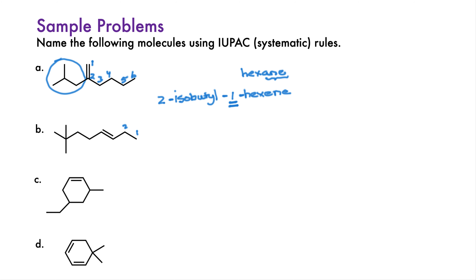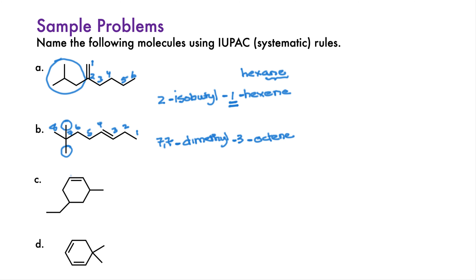In the next example, the parent chain is horizontal and has eight carbons — the parent is an octene. We can number from the right to give the alkene the lowest possible number. There are two methyl substituents, so this is a dimethyl-octene. We give the alkene position 3, the lowest possible number, and the methyls must then be at positions 7 and 7.